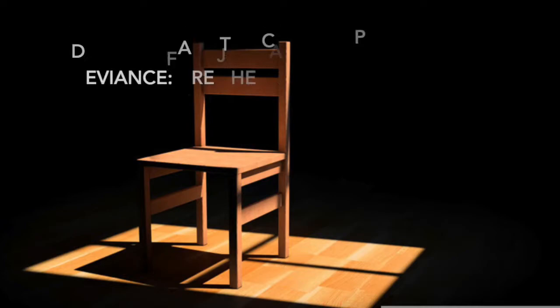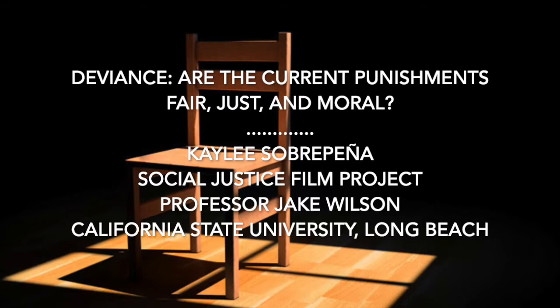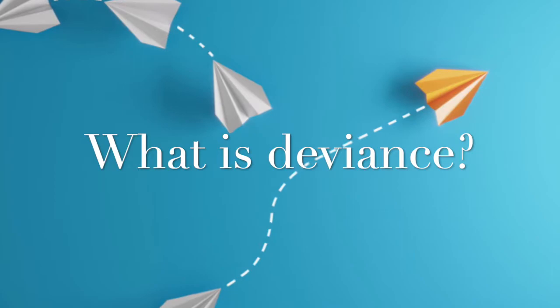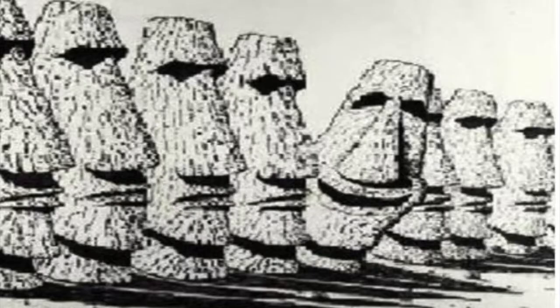Hi, my name is Kaylee Soberpena and my social justice film project will be on deviance — are the current punishments fair, just, and moral? According to our Sociology 100 class's book, Revel, deviance is any behavior that does not conform to social expectations.